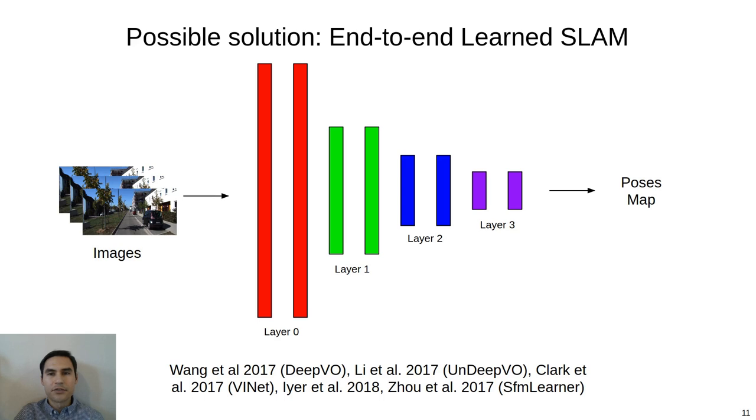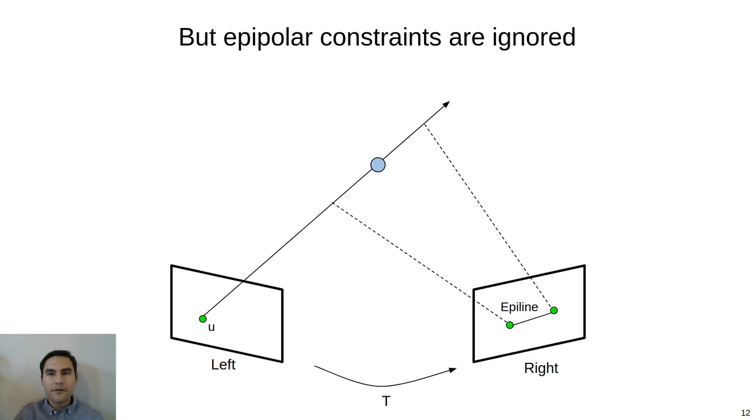Another possible solution is to train a neural network end-to-end to regress the pose of the camera from assembled images. This method has seen a surge of interest in recent years, given the rapid adoption of deep learning to various computer vision tasks. However, by training a network end-to-end, many of the observable constraints in the monocular SLAM problem, such as those generated by the epipolar geometry, are ignored.